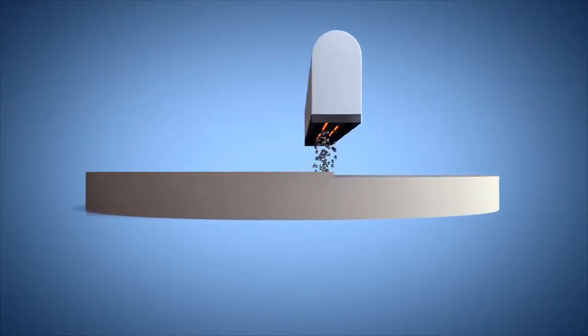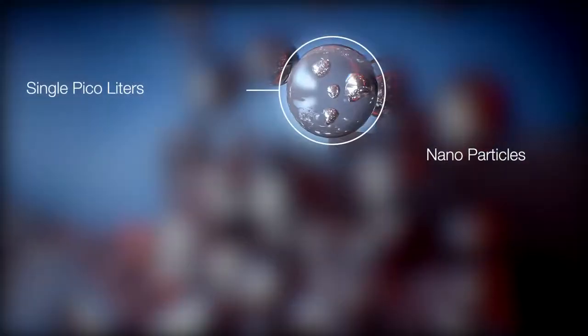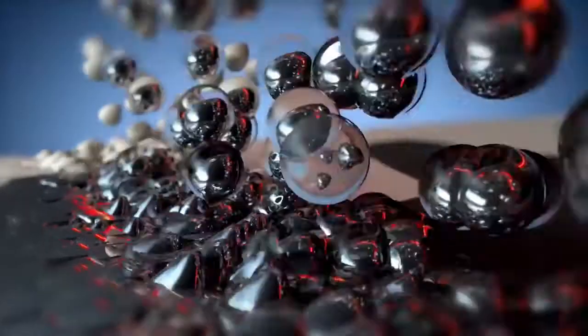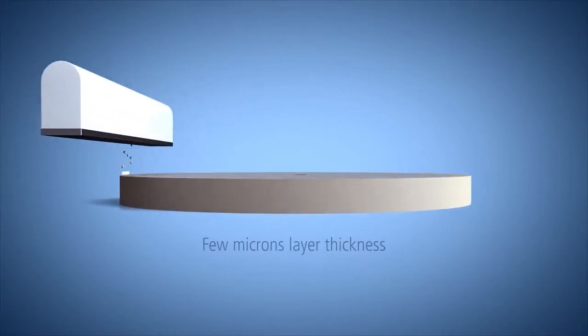With each pass of the print head, the metal part builds up as the tray descends. The metal liquid formula and the support material are jetted from many thousands of printing nozzles simultaneously, in a process that's up to five times faster than laser metal printers.